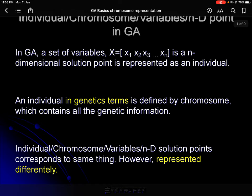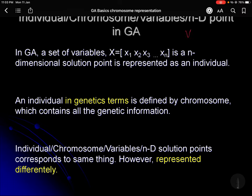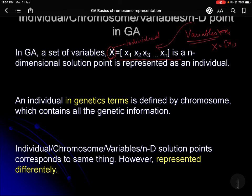Today we'll see what we mean by an individual, chromosome, variables, or N-dimensional point. Variables are actually defining the problem here — x1, x2, and so on are the variables. A set of variables, or variable set x, is also known as an individual. An individual is an N-dimensional point, which is also a kind of solution point in a problem.